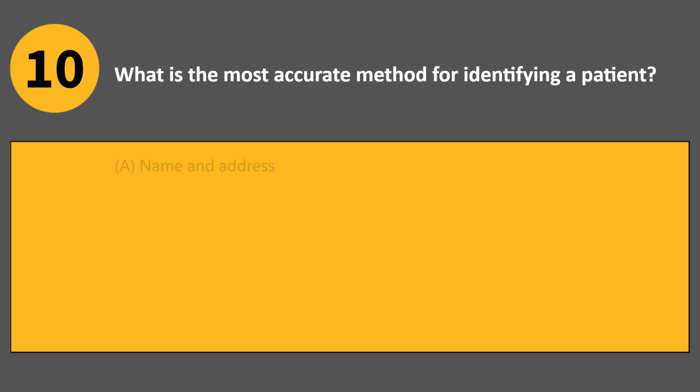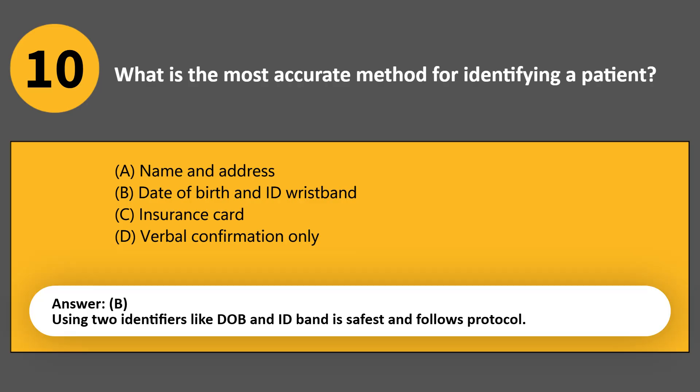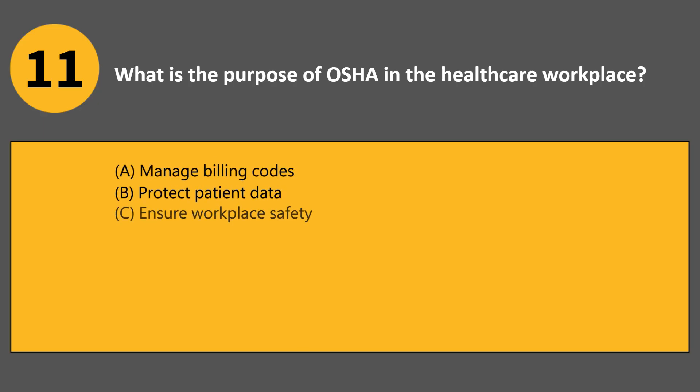What is the most accurate method for identifying a patient? A. Name and address. B. Date of birth and ID wristband. C. Insurance card. D. Verbal confirmation only. Answer B. Using two identifiers like date of birth and ID band is safest and follows protocol.